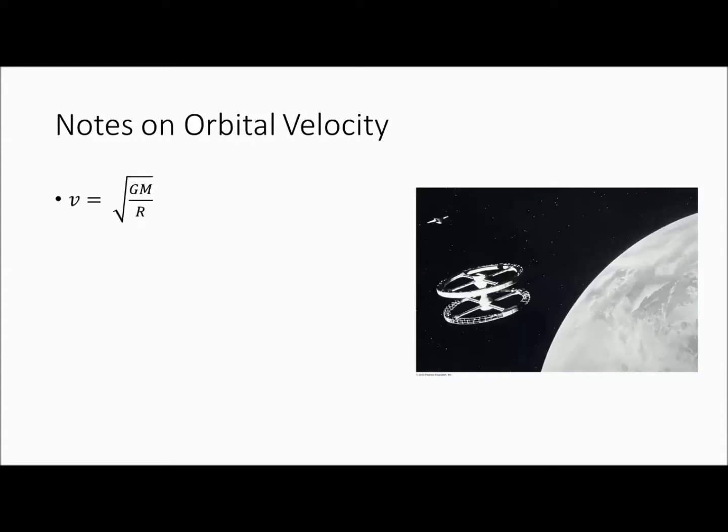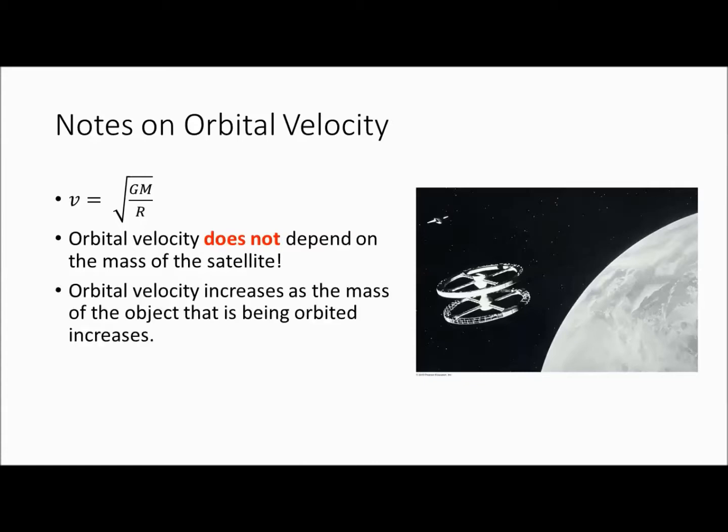So here are some notes on orbital velocity. Looking at this equation, we'll note that the orbital velocity does not depend on the mass of the satellite. You can have a very large satellite and it will not make a difference in terms of the velocity. Orbital velocity will increase as the mass of the object that's being orbited, like the planet, increases. And orbital velocity will decrease as the distance from the center of the object increases. So as you move your satellite further away, your satellite will travel more slowly.